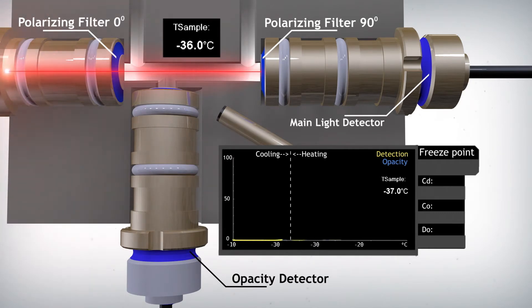Note that the light beam passes through and is polarized by the first polarization filter, but is blocked by the polarization filter configured perpendicularly to the main light detector. As the sample approaches close to minus 38 degrees Celsius, fine crystals start to appear.